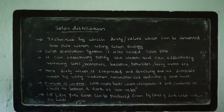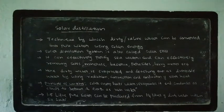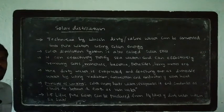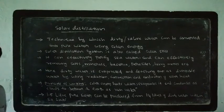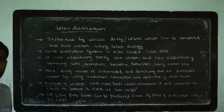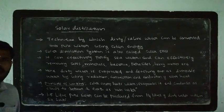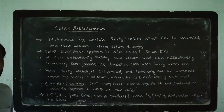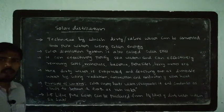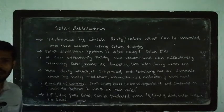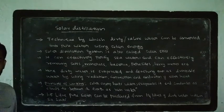Dirty water evaporates and gets converted into drinkable water by using radiation, convection, and conduction of solar heat. We use solar heat — radiation, conduction, convection. This is what we do.